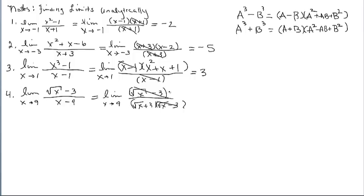When you cancel, remember that results in a 1. You have to leave that as a placeholder in the numerator. Now we can plug in 9: in the numerator we have 1, and in the remaining factor, the square root of 9 is 3, and 3 plus 3 is 6. So our answer for this limit is 1 sixth. There must be a point discontinuity occurring at the zero of these common factors.